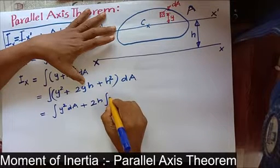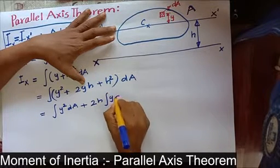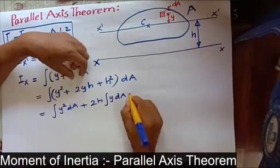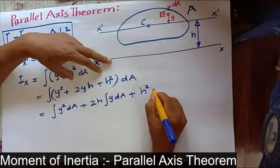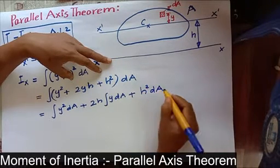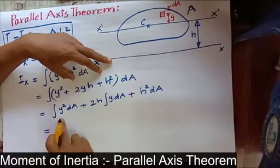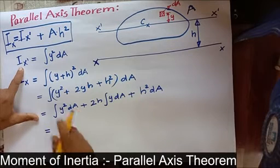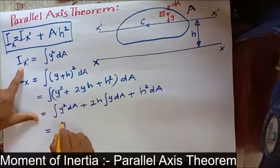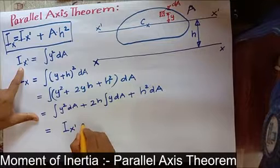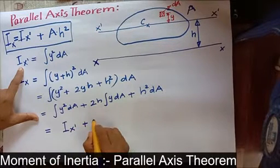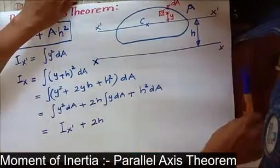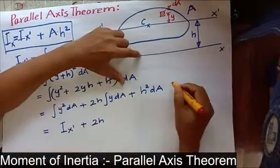So expanding, we get three terms: integral of y² dA, plus 2h times integral of y dA, plus h² times integral of dA. The first term, integral of y² dA, is I-x-dash — the moment of inertia about the centroidal axis.